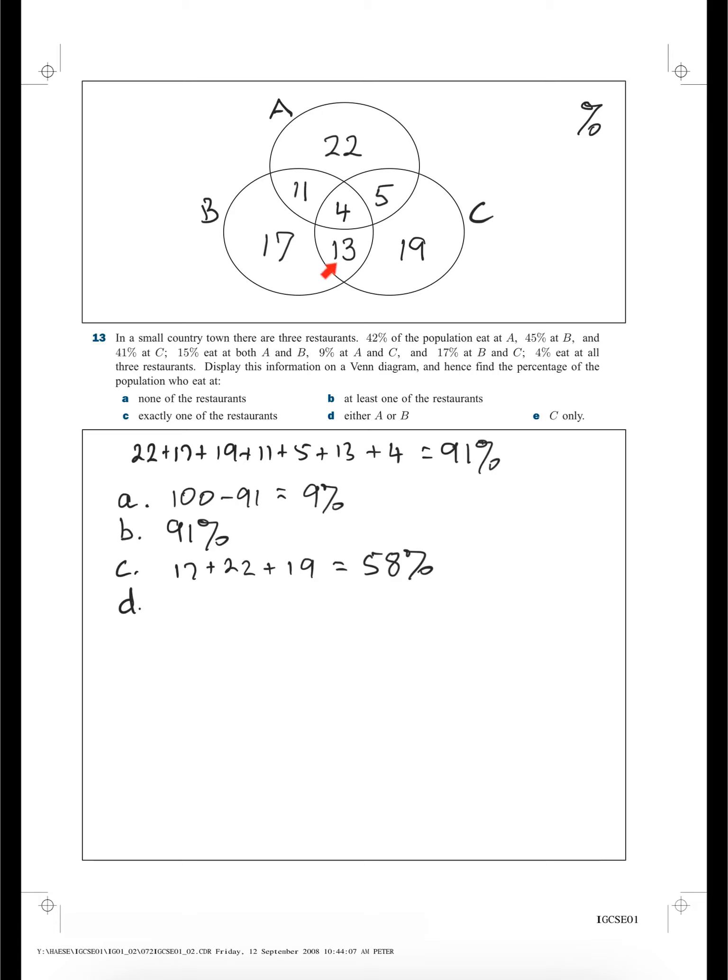So why don't we just take 19 off 91. 91 minus 19. That's going to be 72%.